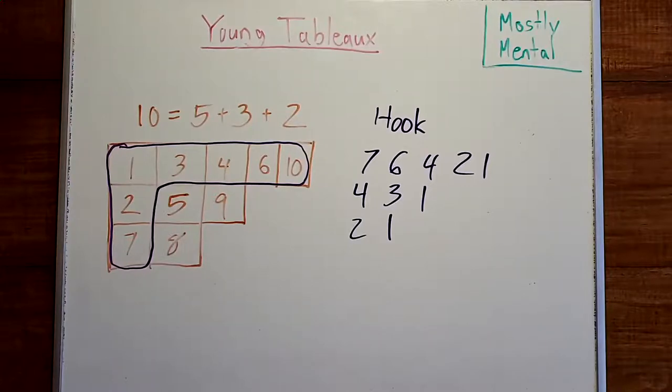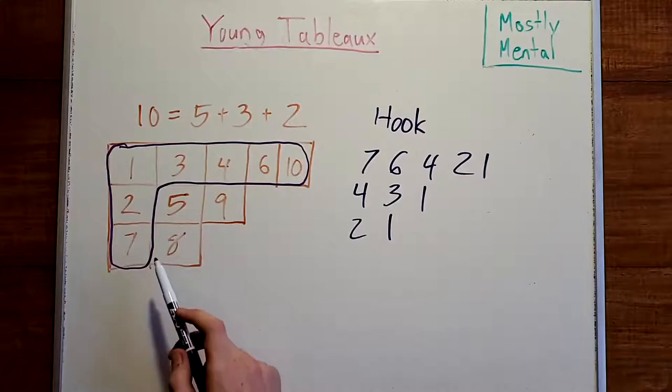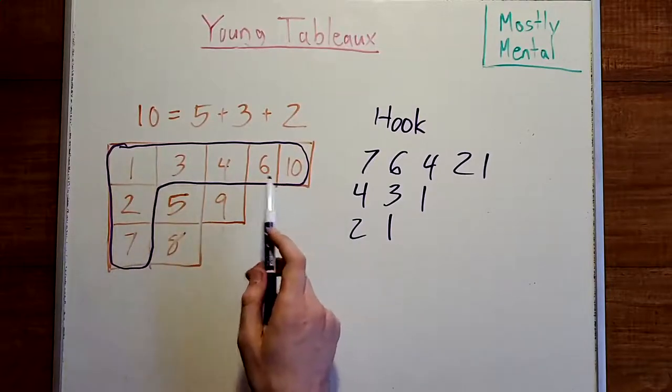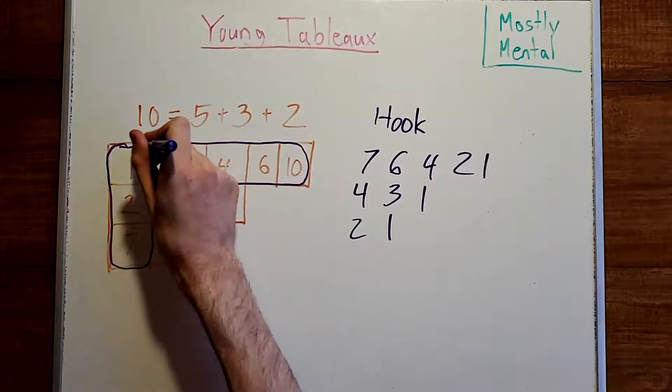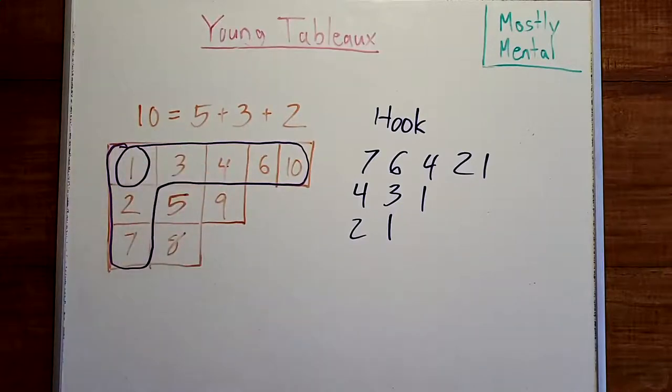Well, notice that if a filling of boxes gives us a valid tableau, then in each hook, the smallest element must be at the top left. And the reverse is also true. If each hook has its smallest number in the top left, then putting them all together, we end up with a valid tableau.